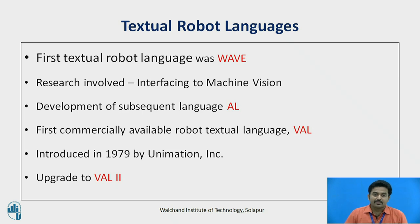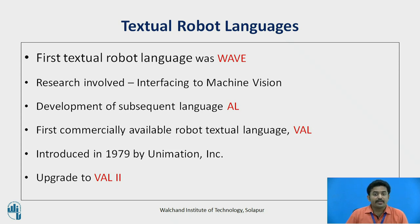The first Textual Robot Language was WAVE, developed in 1973 as an experimental language for research at the Stanford Artificial Intelligence Laboratory. Research involving a robot interfaced to a machine vision system was accomplished using the WAVE language. The development of a subsequent language began in 1974 at Stanford.